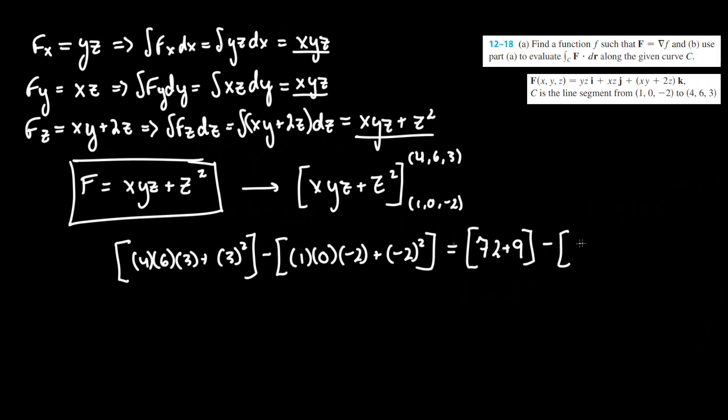Subtract that by, we know this term here is 0 plus negative 2 squared, which is 4. Simplifying that further, we get 72 plus 9 is 81, subtract that by positive 4, we get our final answer of 77.